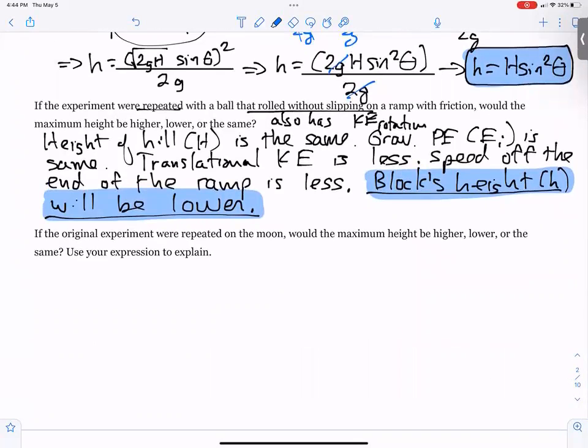If the original experiment were repeated on the moon, would the maximum height be higher, lower, or the same? Look back to the original expression: H equals H sine squared theta. So what does this tell you? h is only proportional to H, and h is only proportional to the sine of the angle.